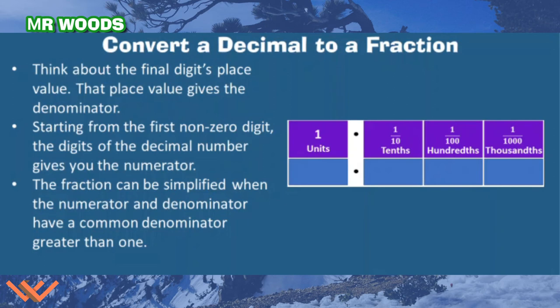Let's look at converting a decimal to a fraction. Think about the final digit's place value. We have the units here, and then to the right of the decimal point we have tenths, hundredths, and thousandths. Starting from the first non-zero digit, the digits of the decimal number give you the numerator, and the fraction can be simplified when the numerator and denominator have a common denominator greater than one. So if we have zero point zero three five.